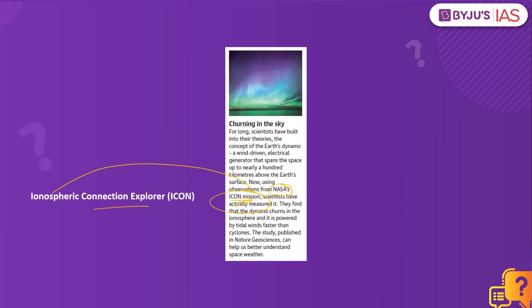ICON stands for Ionospheric Connection Explorer — a satellite designed to investigate changes in the Earth's ionosphere. This region is important because terrestrial weather meets space weather in the ionosphere. Radio communications and GPS signals travel through this region, and space weather interference could harm technological progress. NASA developed this mission to understand the ionosphere and mitigate impacts on communication systems and society.